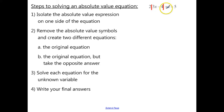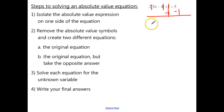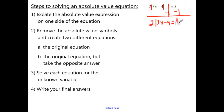We want to get rid of the positive 1 by subtracting 1 on both sides. Then we're left with 2 times the absolute value of 3x minus 4, equals 5 minus 1, which is 4.